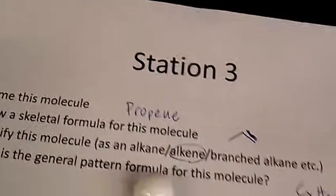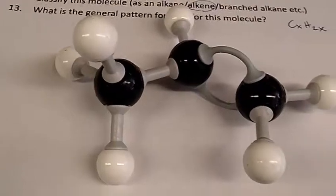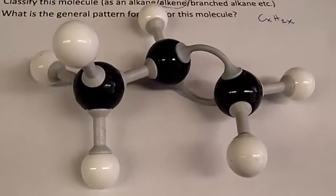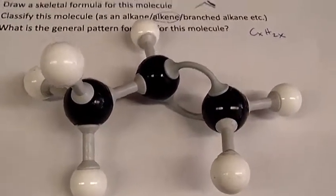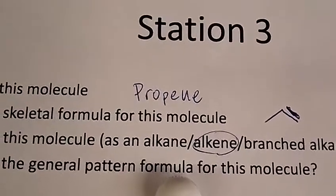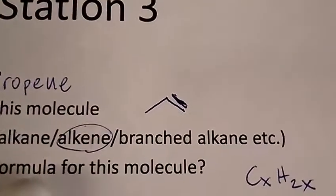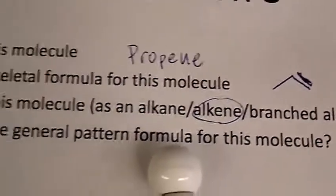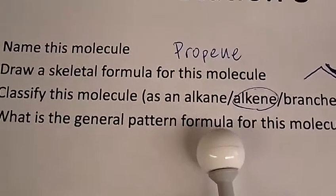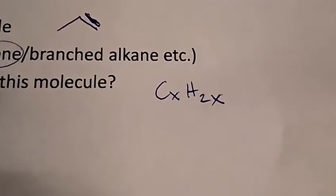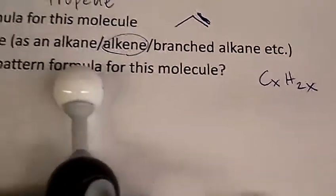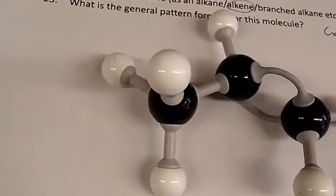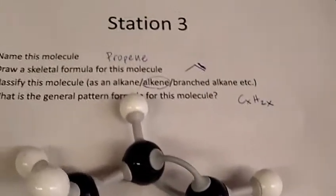Station three — this molecule has three carbons, and notice there's a double connection between two of those carbons. If you count the total number of hydrogens, it's six. So this molecule is propene. The skeletal formula for this molecule would show the double bond, and you could switch it to put the double line on the left side. It is an alkene. The general pattern formula for this molecule would be CxH2x — any alkene with just one double bond has twice as many hydrogens as carbons.